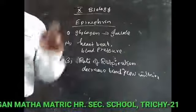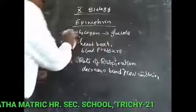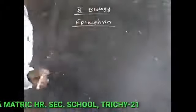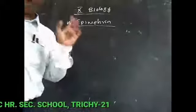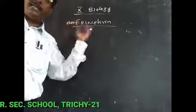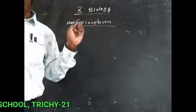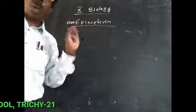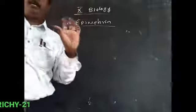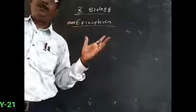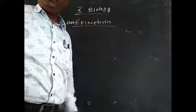The action of norepinephrine is similar to that of adrenaline or epinephrine, but the effects occur in a slower manner. Most of the actions are similar but happen more slowly. These are the structure and functions of the adrenal gland.